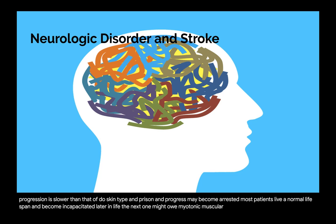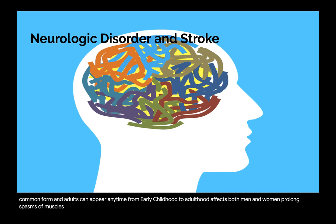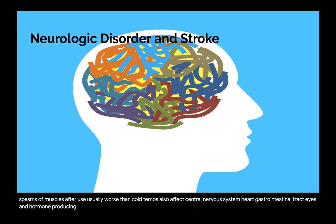Myotonic muscular dystrophy (Steinert disease) is the most common form in adults, and can appear anytime from early childhood to adulthood, affecting both men and women. It is characterized by prolonged spasms of muscles after use, usually worse in cold temperatures. It also affects the central nervous system, heart, gastrointestinal tract, eyes, and hormone-producing glands.